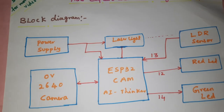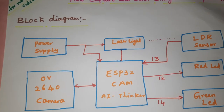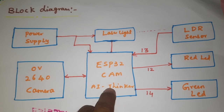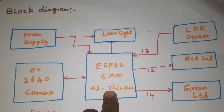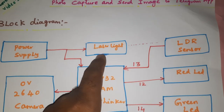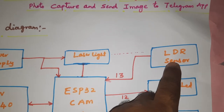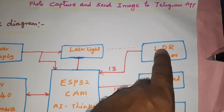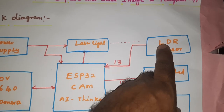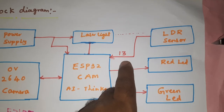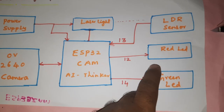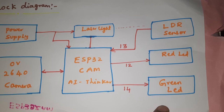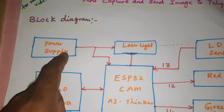Here we are using an ESP32 camera module with OV2640 camera, an ESP32 AI Thinker board, laser light, and an LDR sensor — light dependent resistor. Light falling onto the resistor varies the voltage, and it is connected to GPIO pin 13. Red LED and green LED are connected to pin 12 and pin 14.